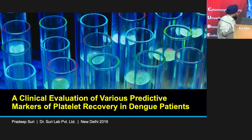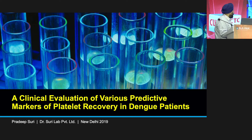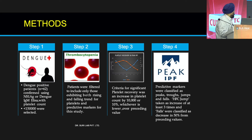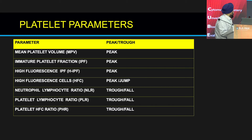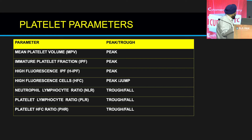The third paper was presented at ISLH in 2019, where we evaluated all predictive markers to see which is best. We again used the same four-step methodology — dengue patients who were thrombocytopenic, with rising and falling titers, and HFC jumps tracked. The parameters measured were mean platelet volume (MPV), immature platelet fraction (IPF), high fluorescence IPF, HFCs, neutrophil-lymphocyte ratio, platelet-lymphocyte ratio, and the platelet-HFC ratio (PHR). We were trying to determine which among this plethora of prognostic markers gives the best results.